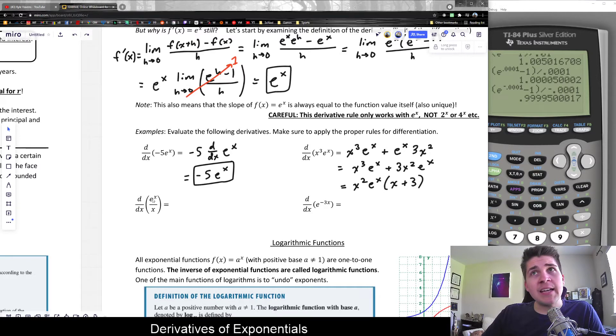Anyways, similarly, if we had e to the x divided by x and we wanted to know the derivative of this whole thing. Again, since it's a fraction, we need to use the quotient rule. Since it's this divided by this, I need to do low d high minus high d low squared at the bottom away we go.